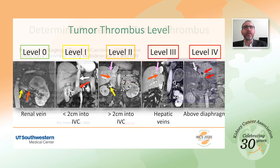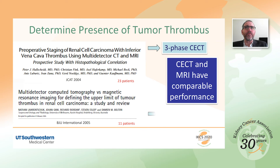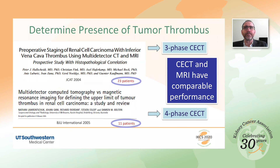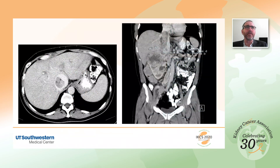A common question is whether MRI is needed after a good quality contrast-enhanced CT. Two prospective studies comparing CT and MRI show excellent performance for both, concluding that current contrast-enhanced CT is similar to MRI for determining the level of tumor thrombus. Importantly, both studies used a multi-phase CT acquisition — three phases in one and four phases in the other — so a single-phase CT will not suffice. These are relatively small studies with 23 and 11 patients each. With adequate technique, contrast-enhanced CT can demonstrate thrombus in the IVC well in most patients, as seen in this patient with level 4 thrombus above the diaphragm.